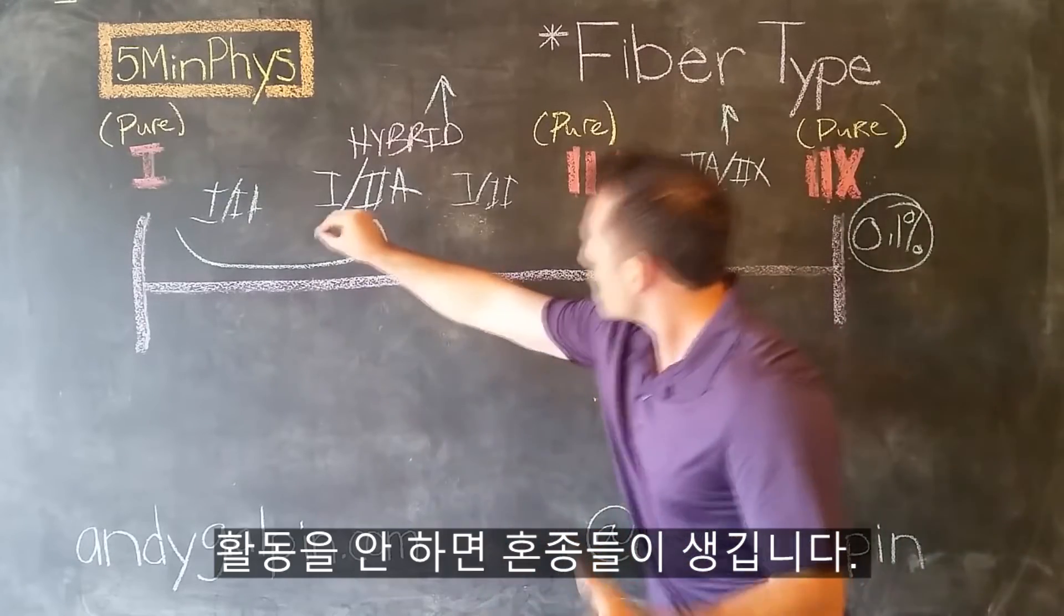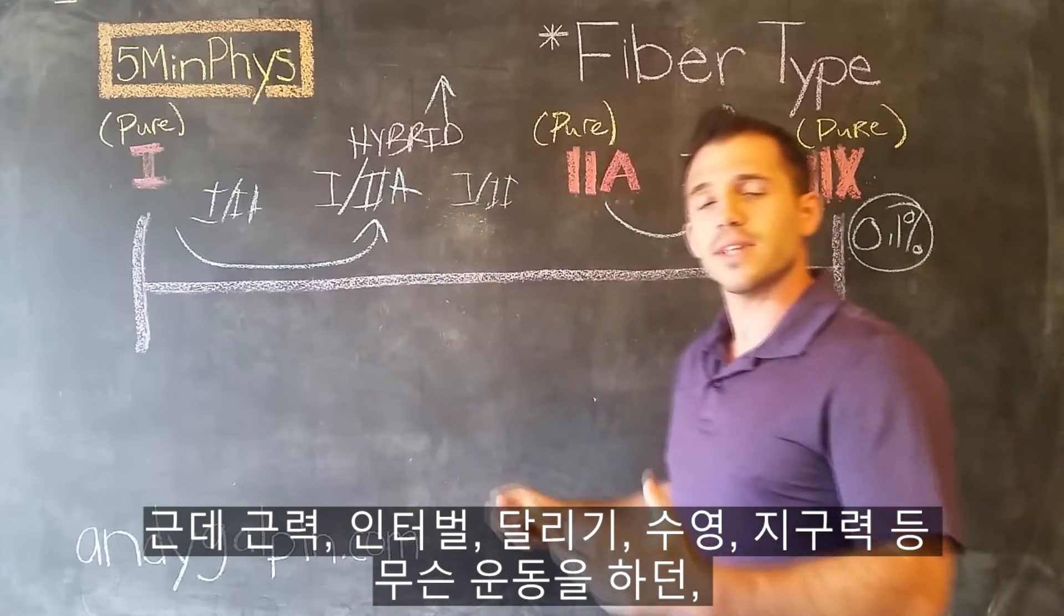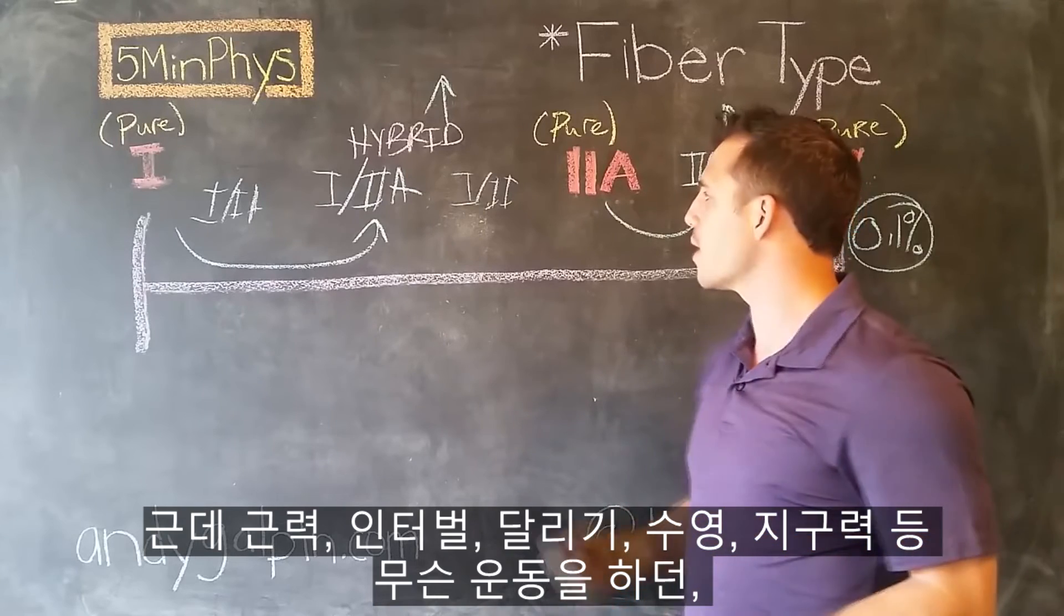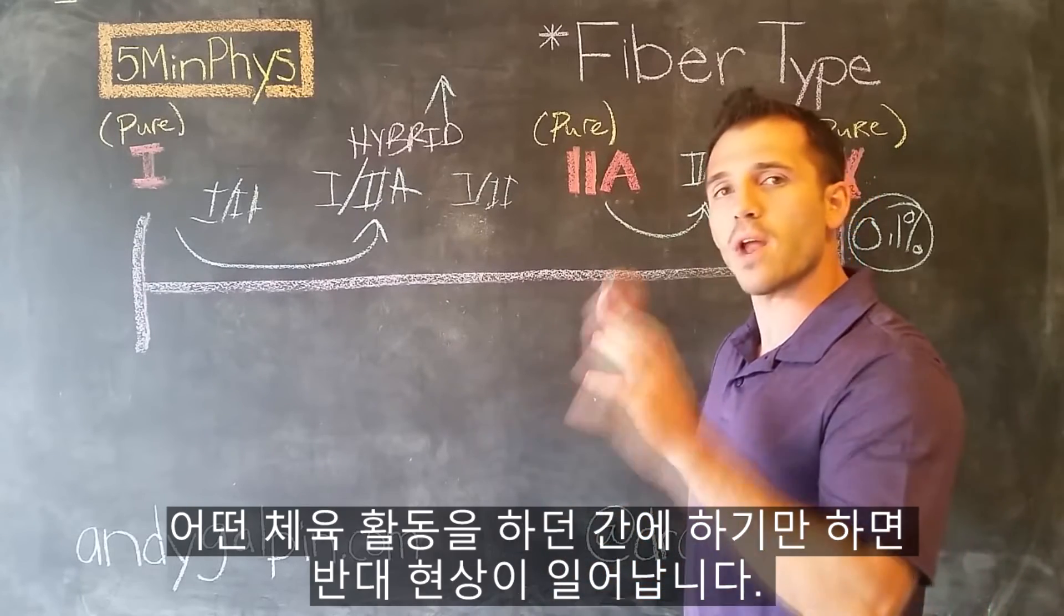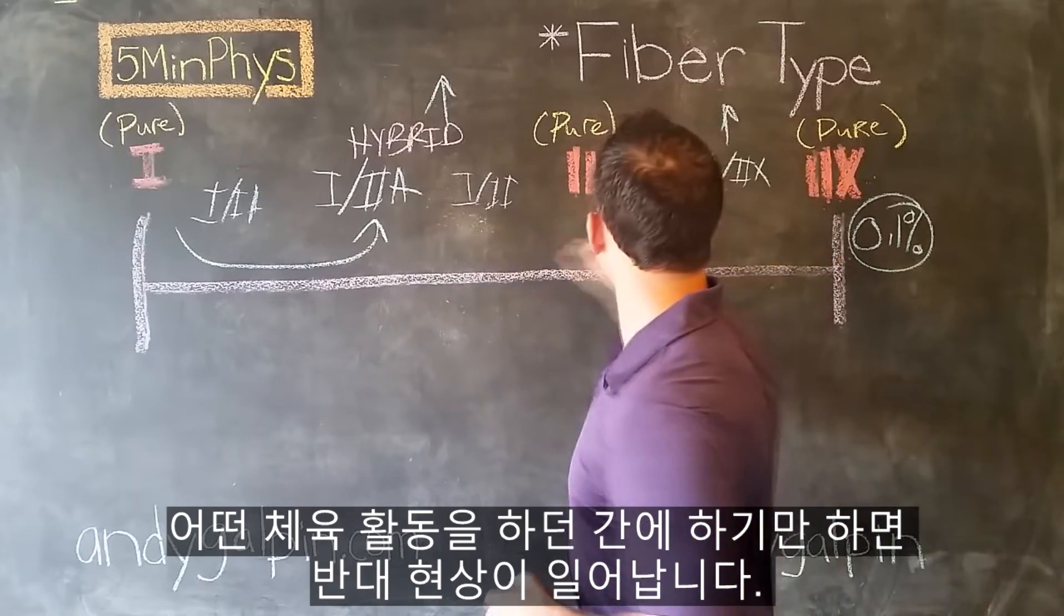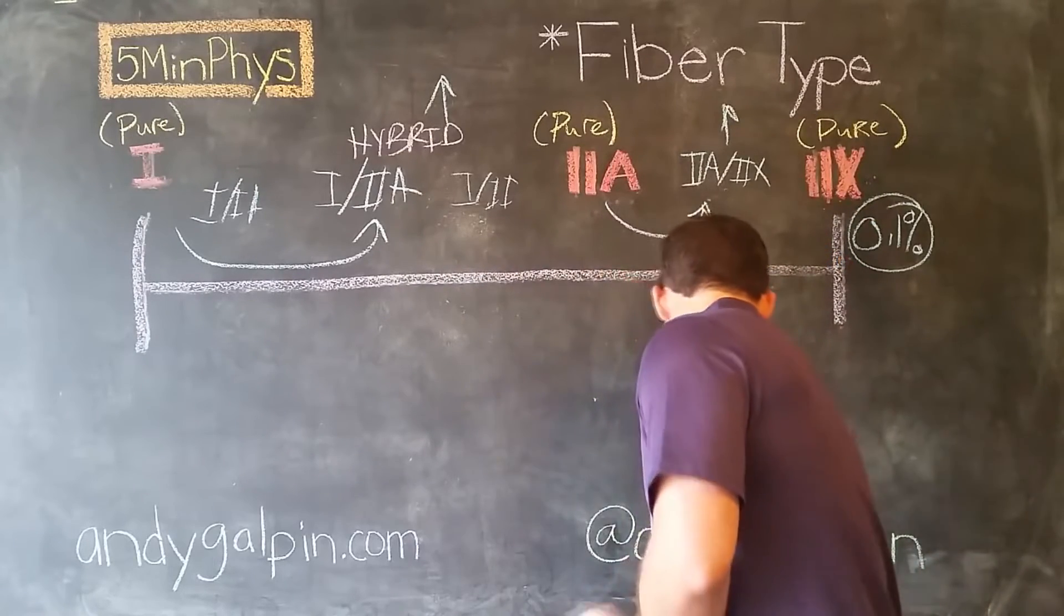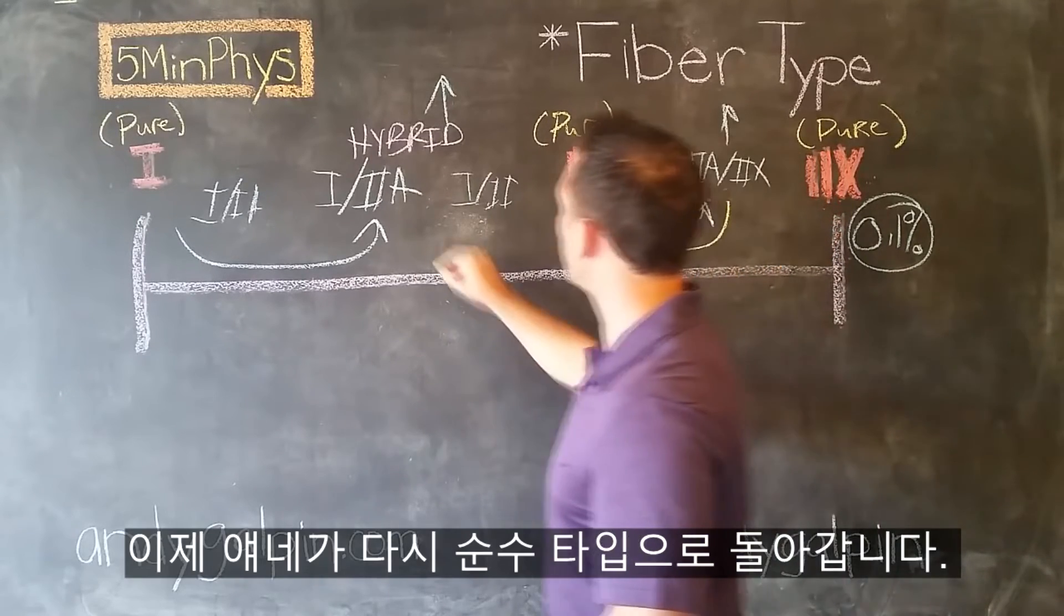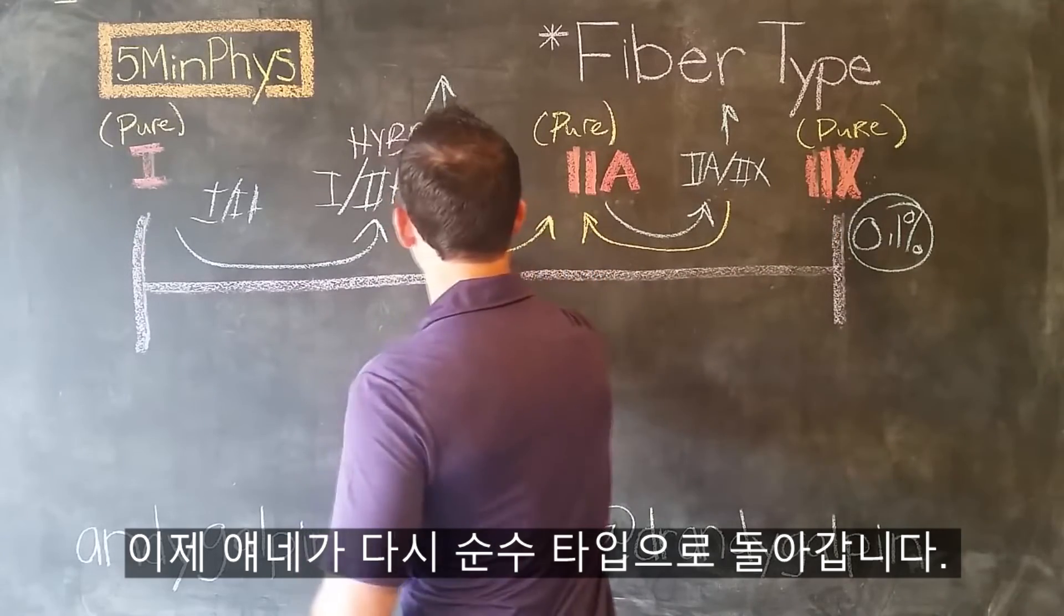So if we become inactive, we gain more of these hybrids. And it actually doesn't matter what we do activity-wise, whether we strength train, do intervals, run, swim, do endurance training. But whenever we do any kind of physical activity, we see the exact opposite.